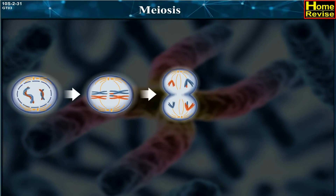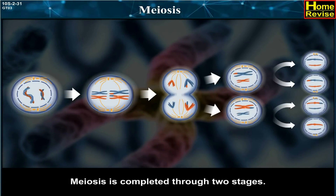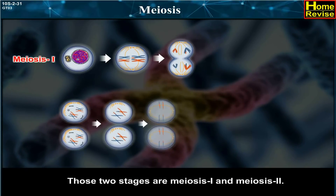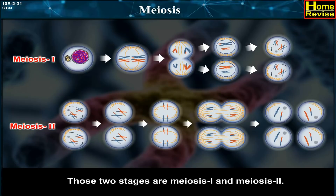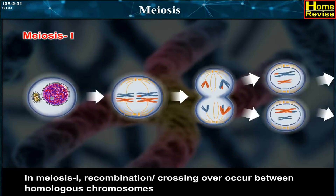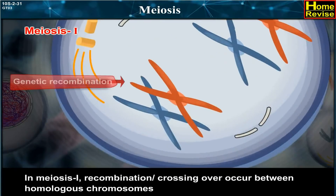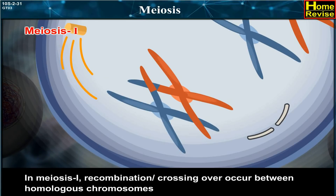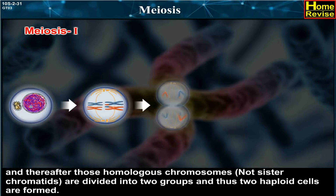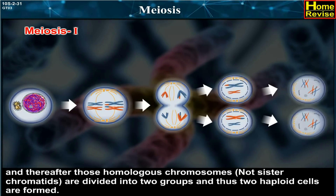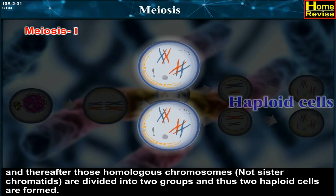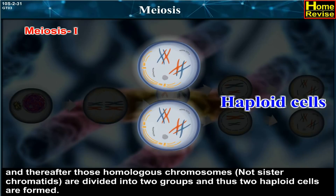Meiosis is completed through two stages: meiosis first and meiosis second. In meiosis first, recombination or crossing over occurs between homologous chromosomes. Thereafter, those homologous chromosomes — not sister chromatids — are divided into two groups, and thus two haploid cells are formed.